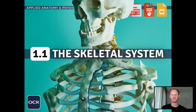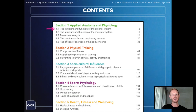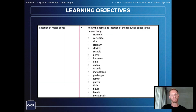Hello and welcome to another complete OCR GCSE PE lesson. In this one we'll be making a start on topic 1.1, the structure and function of the skeletal system, beginning with the very first learning objective: the names and locations of the major bones.